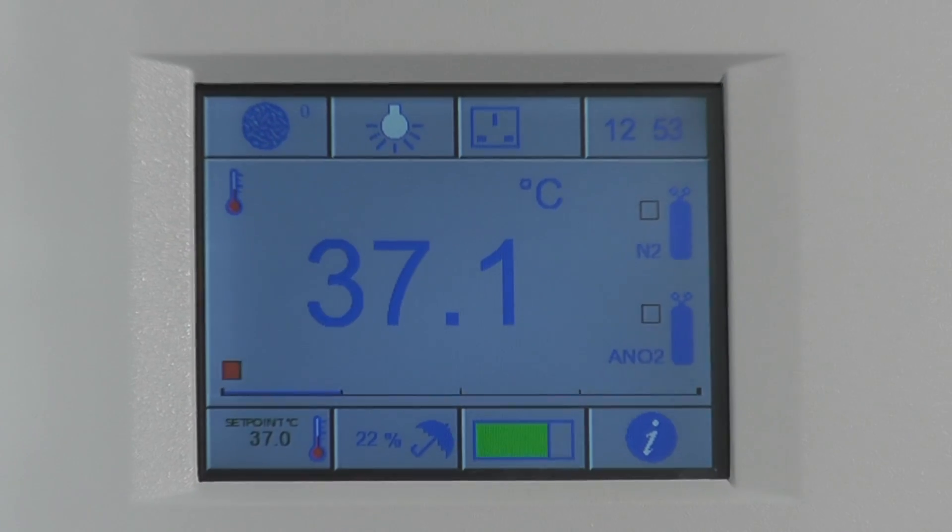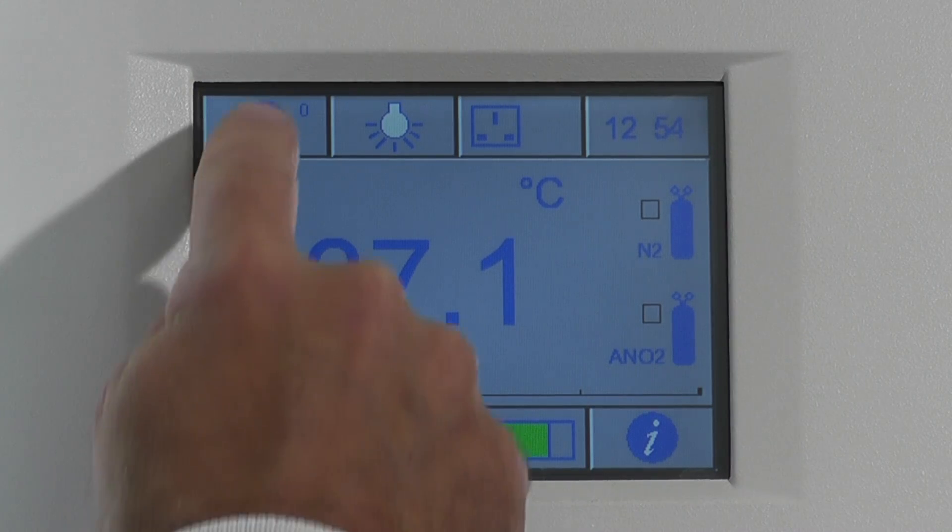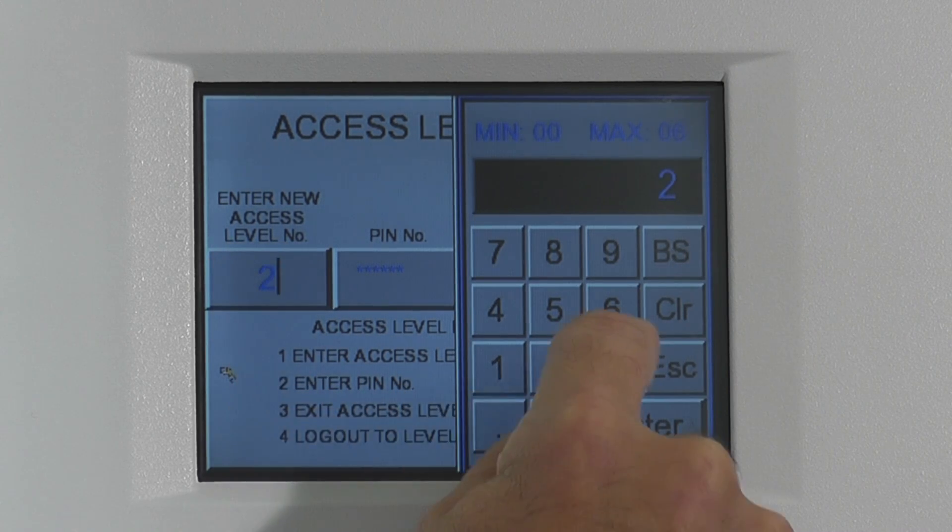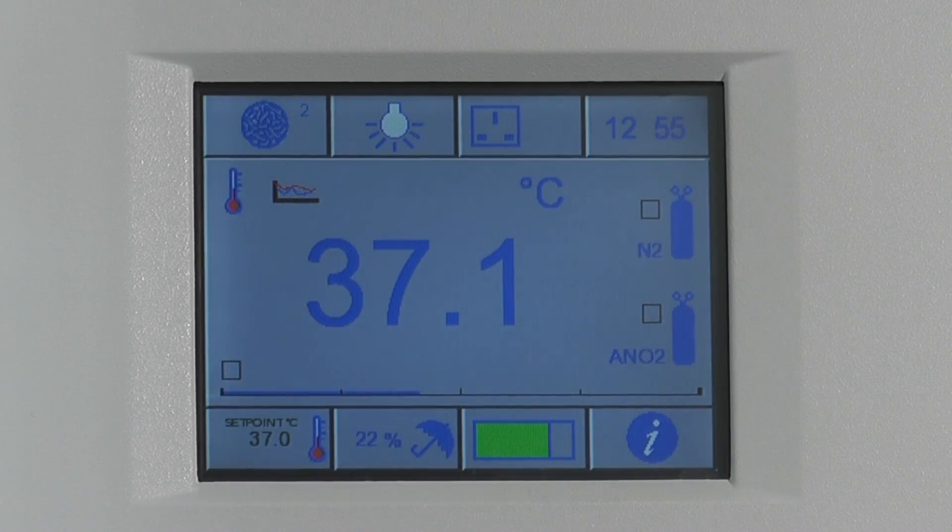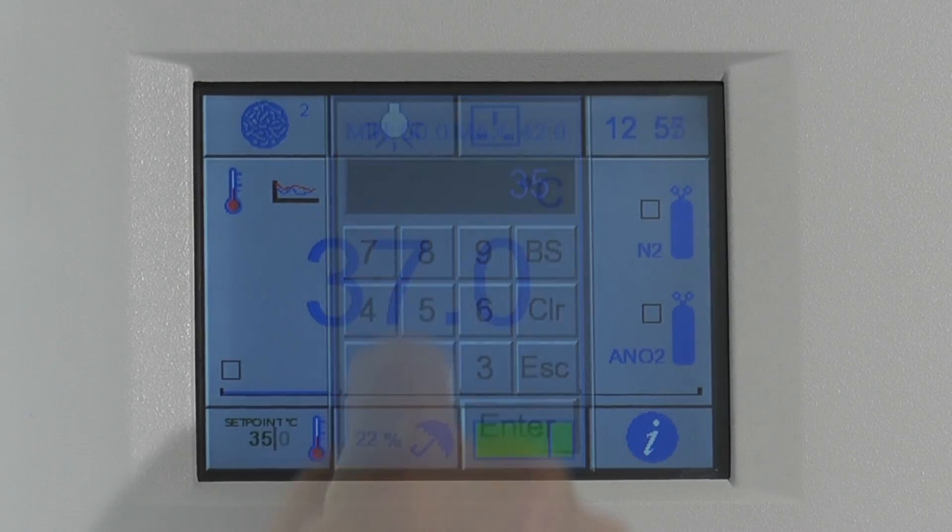The A35 utilizes an innovative touch screen interface with password protected user levels to prevent unauthorized changes to workstation conditions. Temperature and humidity are readily defined by the operator and a history of workstation conditions can be seen at the touch of a button.